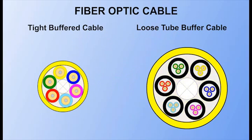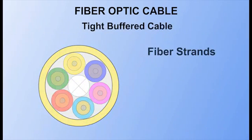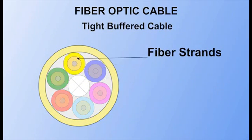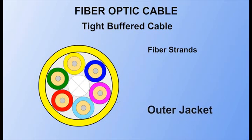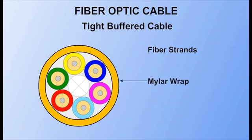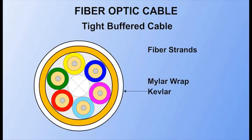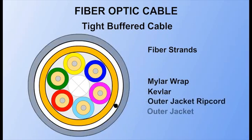They are, however, designed for different environments. A tight buffered cable consists of one or more bundled fiber strands covered by an outer jacket. Often, the outer jacket contains multiple layers to add structure to the cable and provide water resistance.